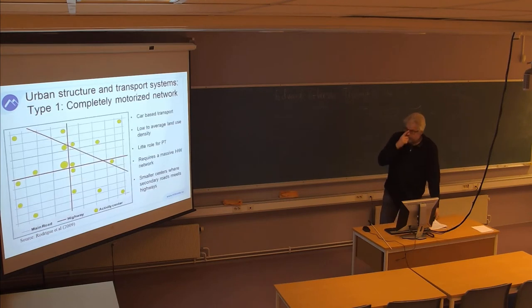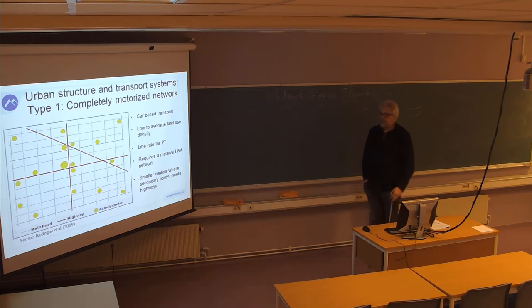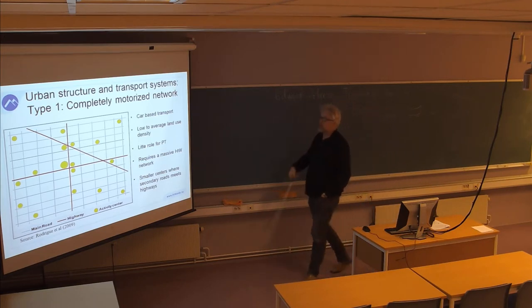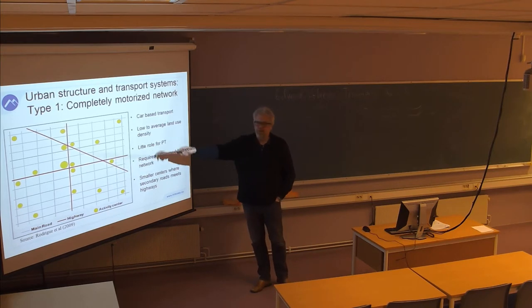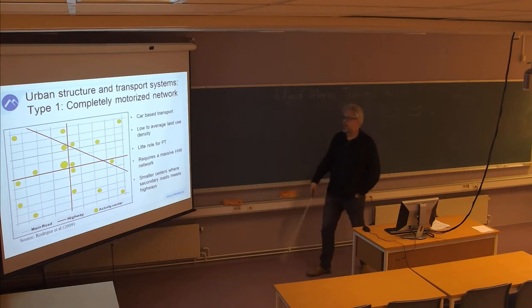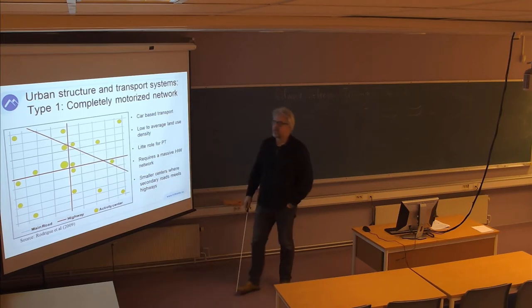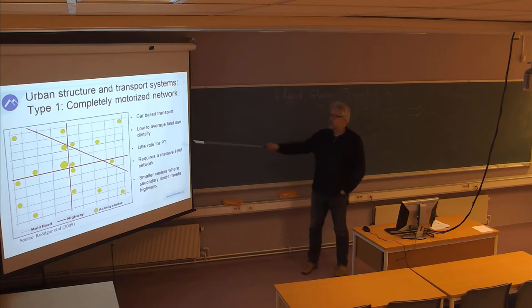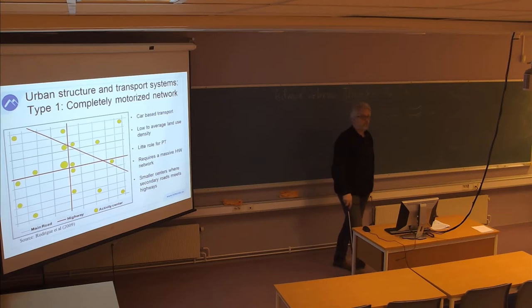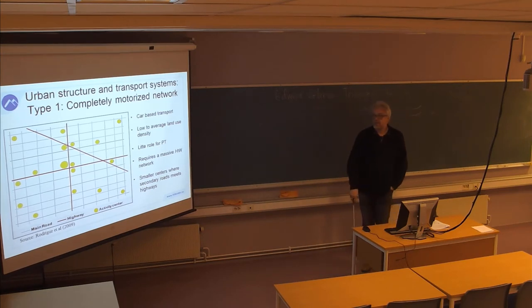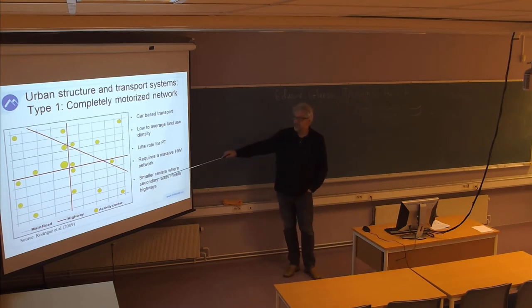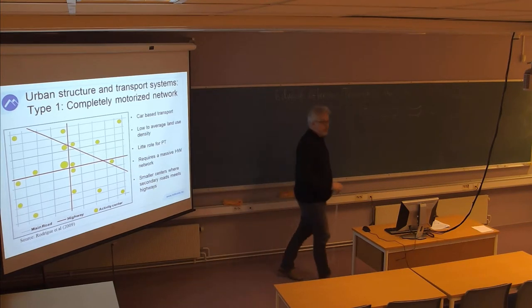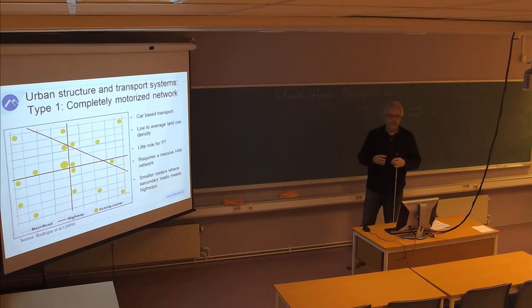We continue with urban structure. This is what we see in many American cities: a completely motorized network with motorways and a dispersed urban structure, with small communities scattered around and a weak center in the middle. Low density, car-based transport, little room for public transport, a massive highway network, and smaller centers which typically grow where secondary roads meet highways.